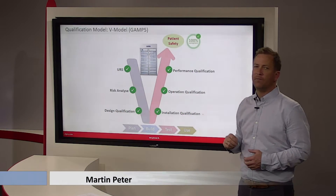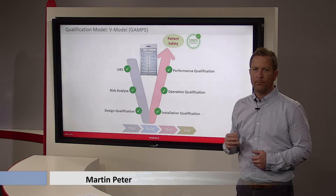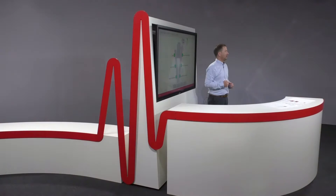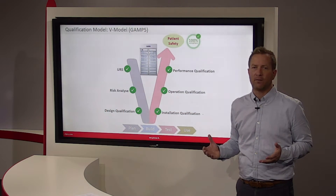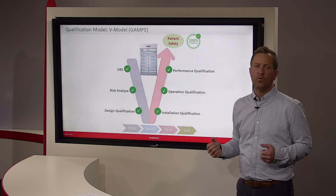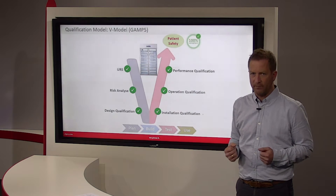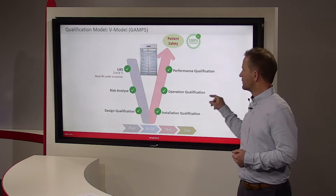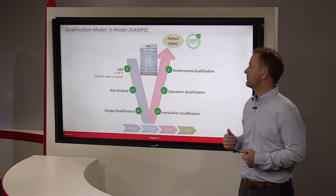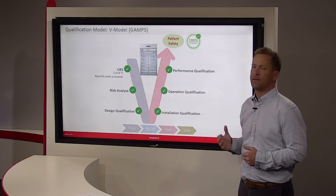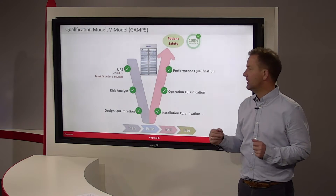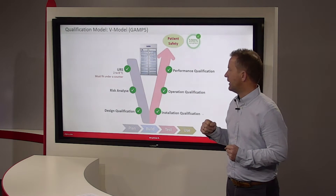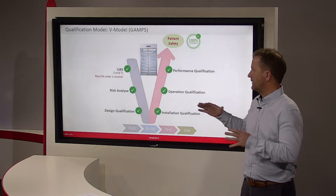We use a very simple example of a 2-8 degree refrigerator. This is a simple example because a refrigerator is standard equipment used in a room temperature environment. The user requirement specification would be very simple: you would define the temperature range for a 2-8 degree device, and maybe define the shape — for instance, it must fit under a counter.